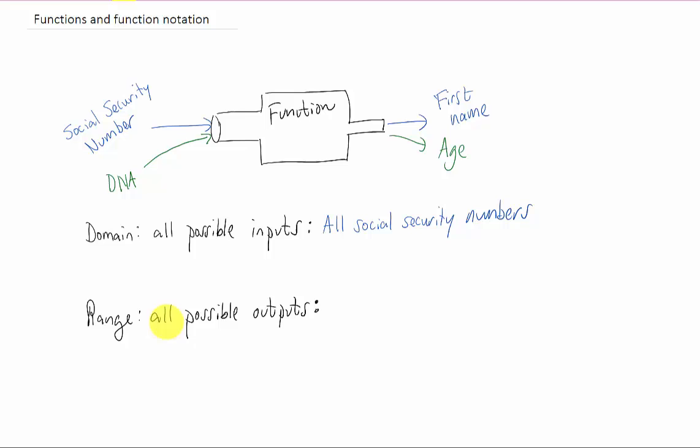The range of a function is all possible outputs of that function. In the blue example here, the range would be all possible first names. It would just be a big list of all the first names of all the people who have social security numbers.